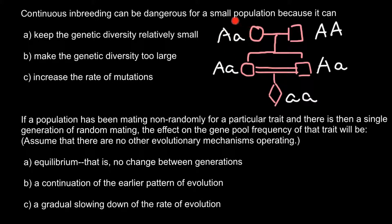Because this individual has two alleles — dominant and recessive. The other parent can only give one of the normal alleles, so that is 100%. But this parent has a 50% chance of giving the recessive allele, so the probability for this female to be heterozygous is one half.